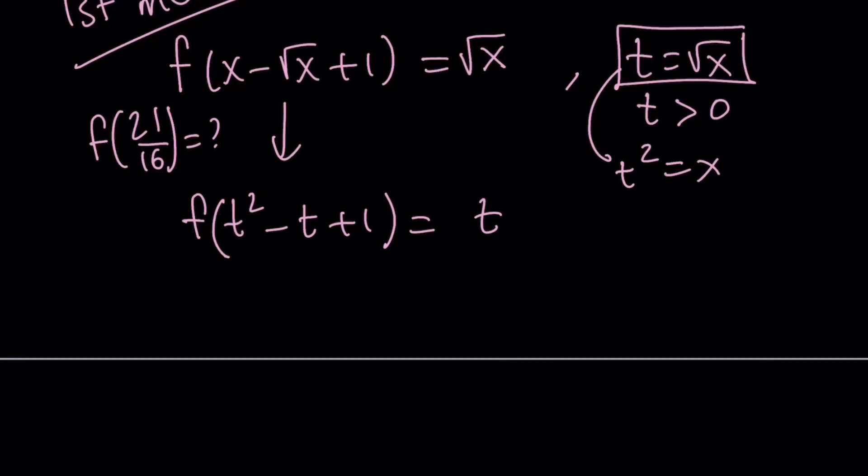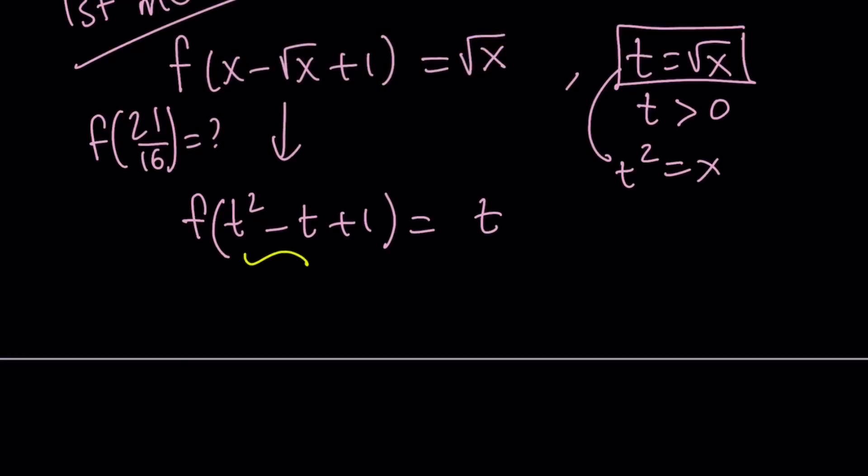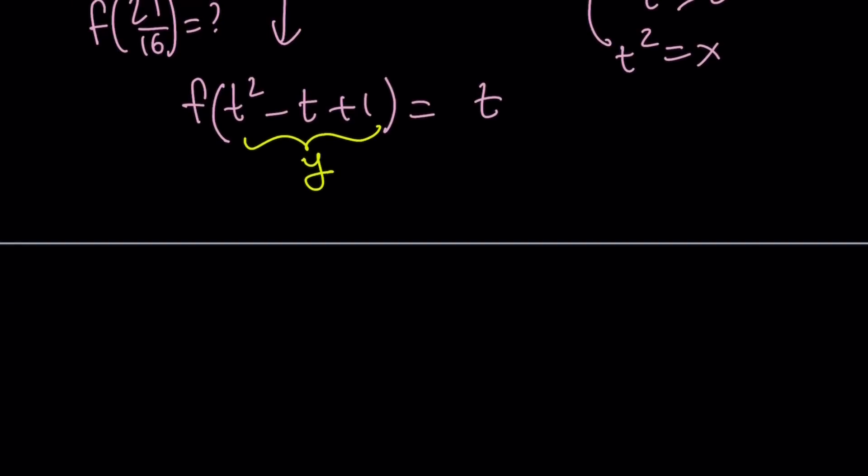Now let's go ahead and make another substitution. Let's set this equal to y. You can also use another variable if you're not familiar with f of y. So now we have t squared minus t plus 1 equals y.